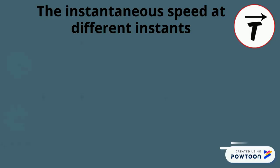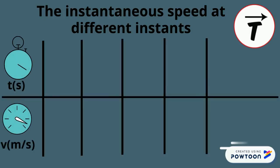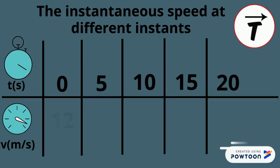In this table, we record the instantaneous speed of the scooter at different instants. Note that the speed remains 12 meters per second at all instants.